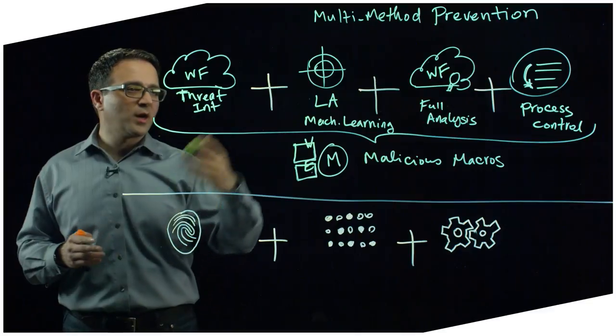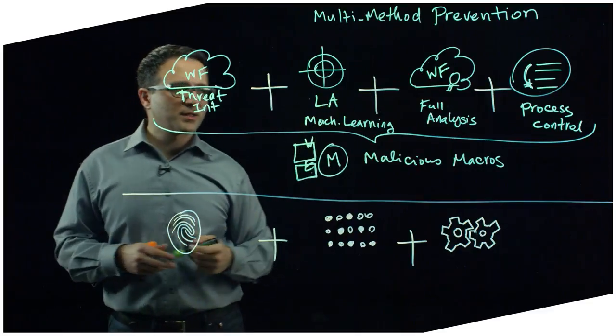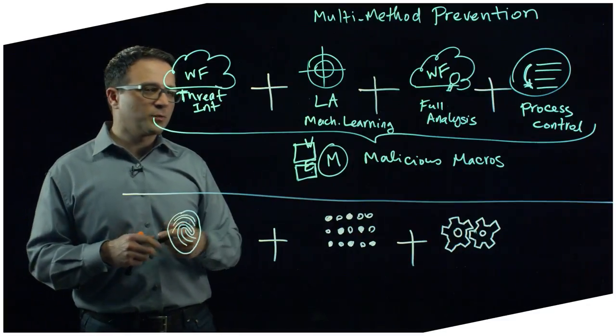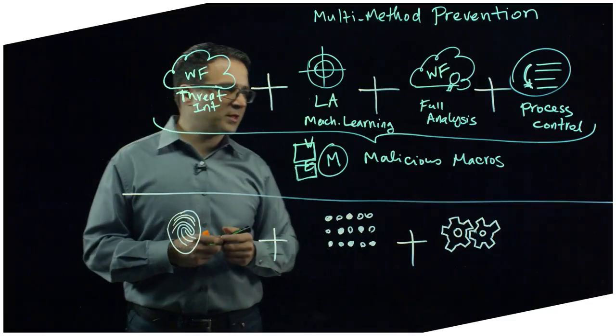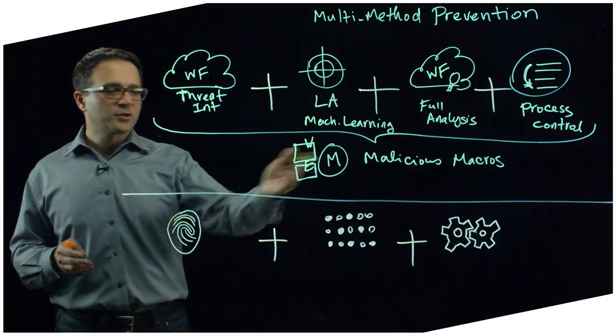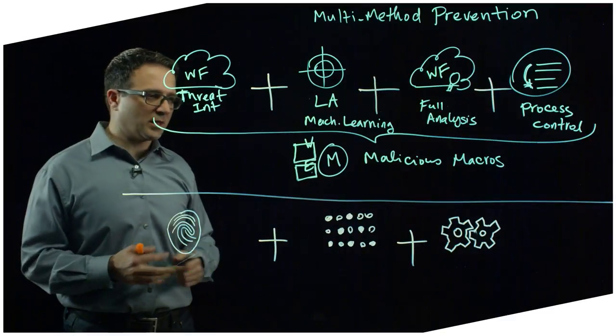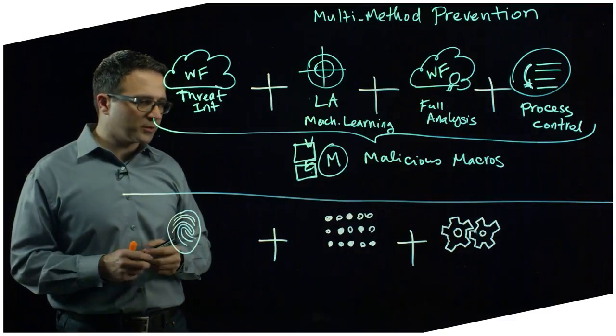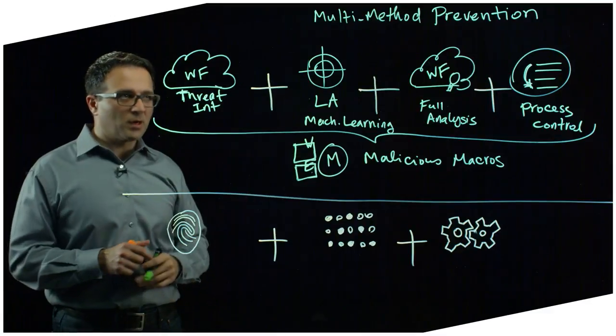If it has and we have a verdict, we act accordingly. Otherwise, we submit it to local analysis on the machine as well as optionally send it up to Wildfire for full analysis so we can determine whether it's likely malicious or benign. The process control, which is a capability that's always on, also prevents the macro from launching sub-processes such as PowerShell and other administrative tools or script interpretation tools. So that's a word about malware prevention.